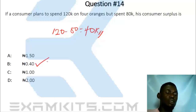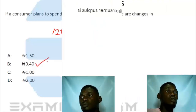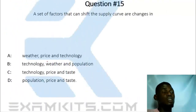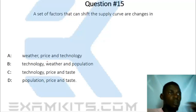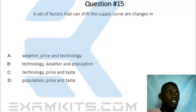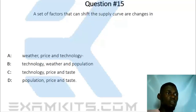Question 15. The set of factors that can shift the supply curve are changes in weather, price, and technology.